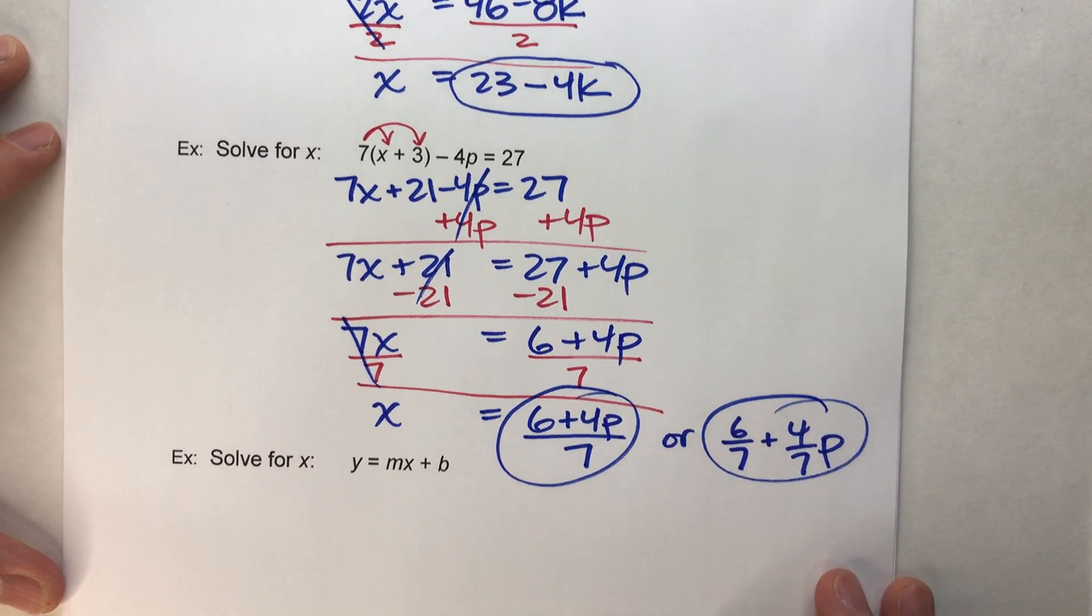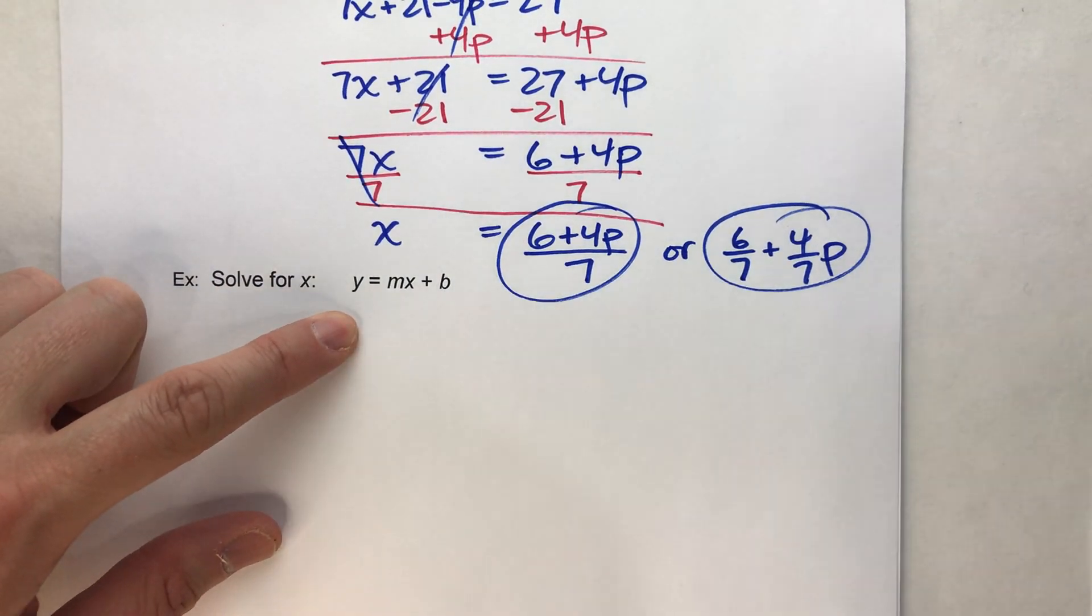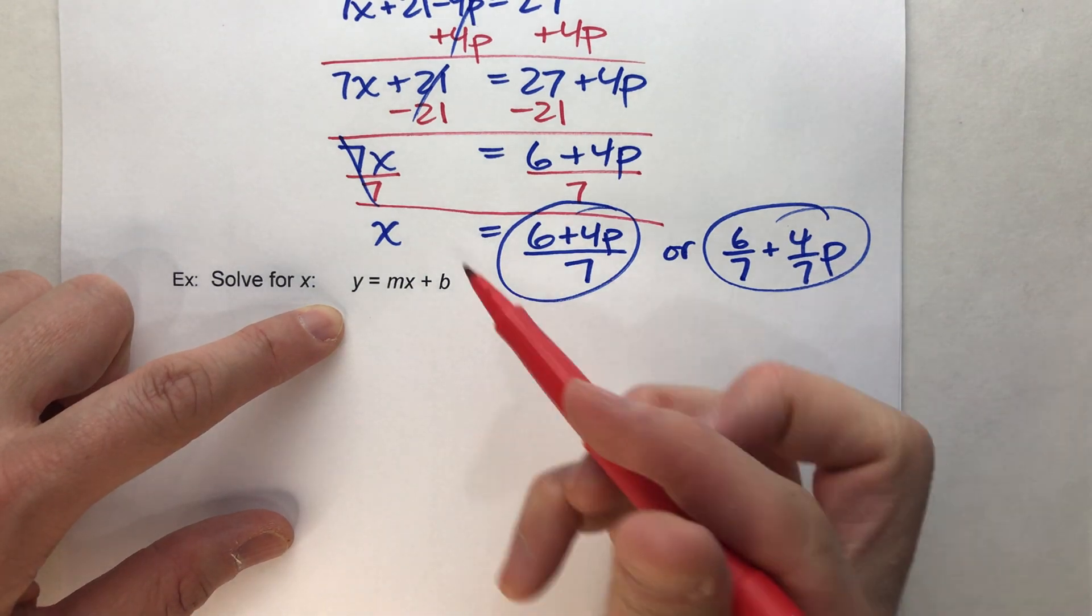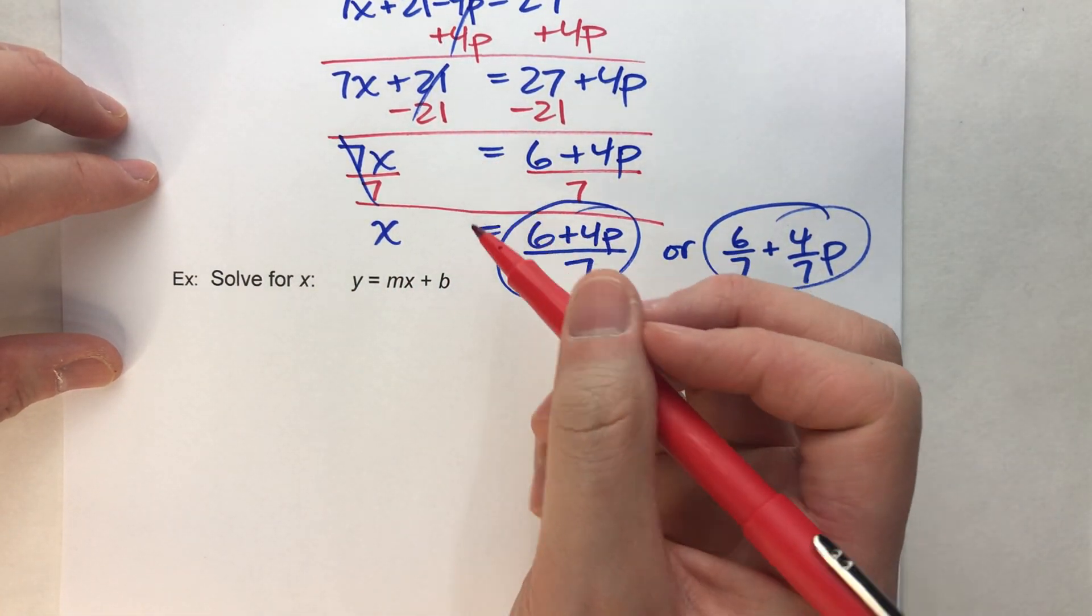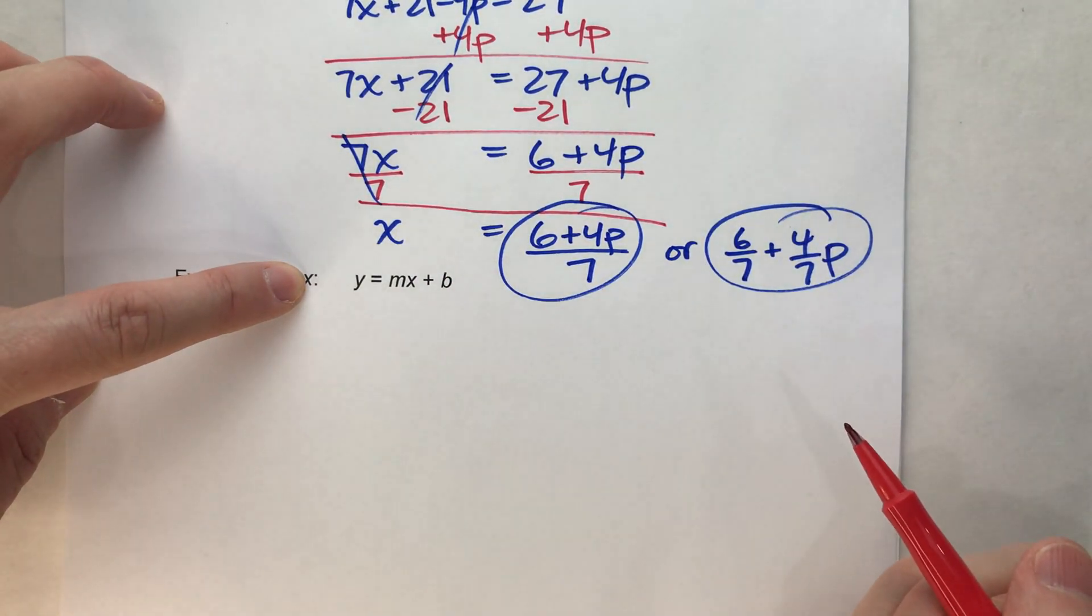We'll do one more example that's not quite as hard, but a little more confusing. Solve for x: y equals mx plus b, the old standard linear equation. Notice, there are absolutely no numbers in this equation. But, it doesn't matter, because we're just going to use algebra to get x by itself.